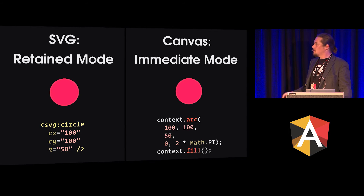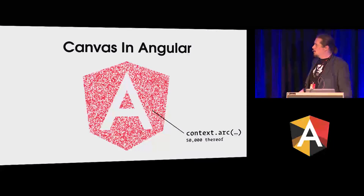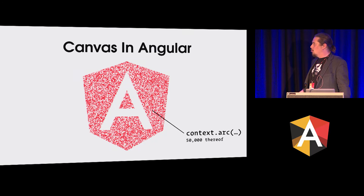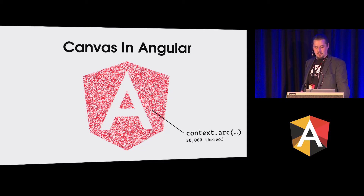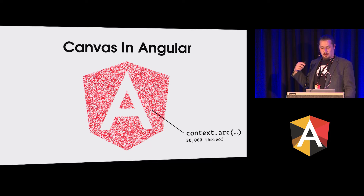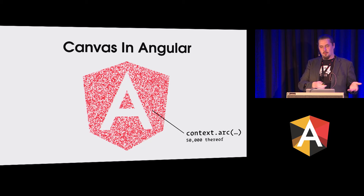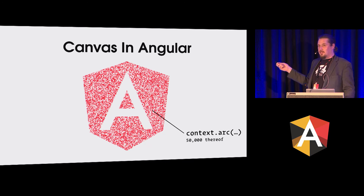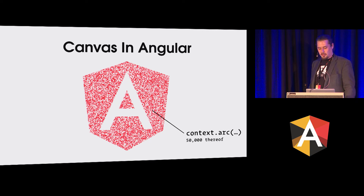We can do something like drawing the Angular logo using 50,000 little points. You could arguably do this in SVG too, but using 50,000 DOM elements for your logo is going to lead to trouble. With canvas you can just do that — it's no problem — which shows the difference in resource usage between the two.